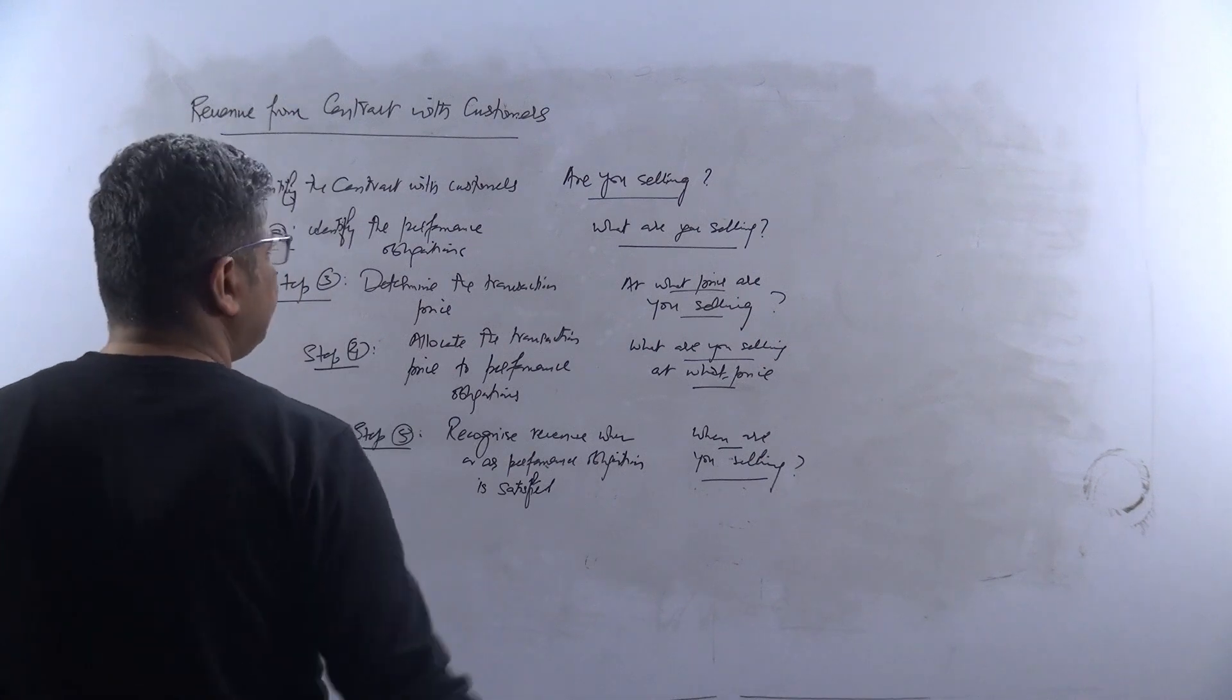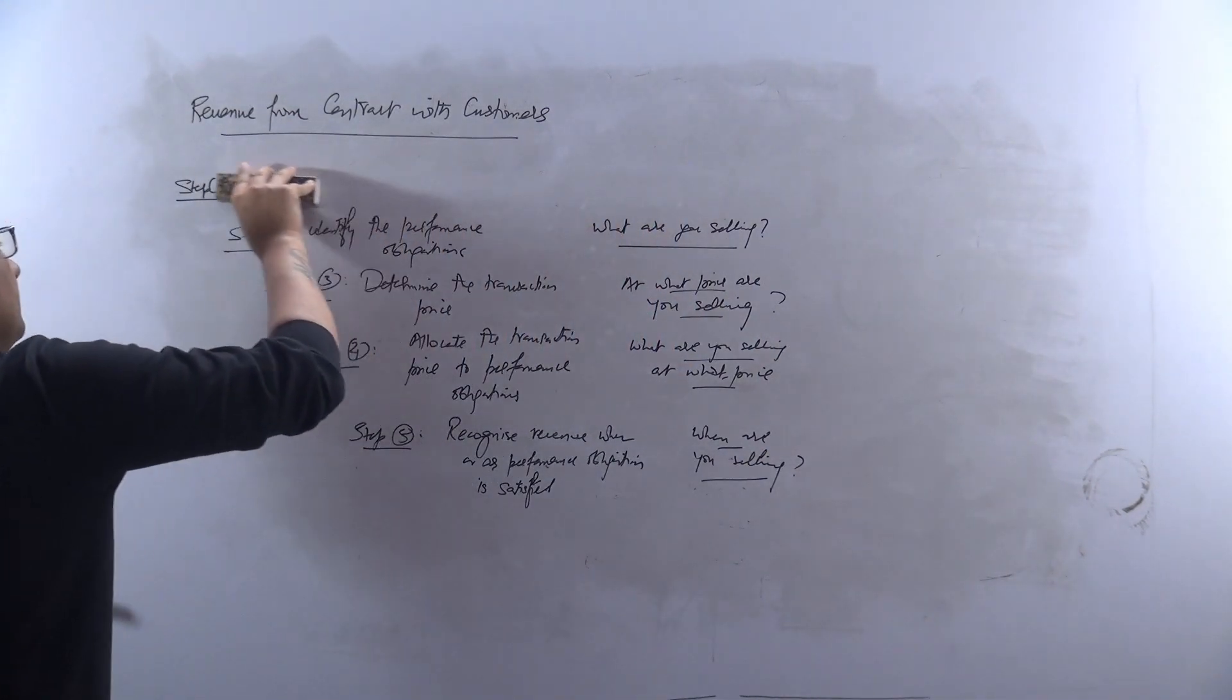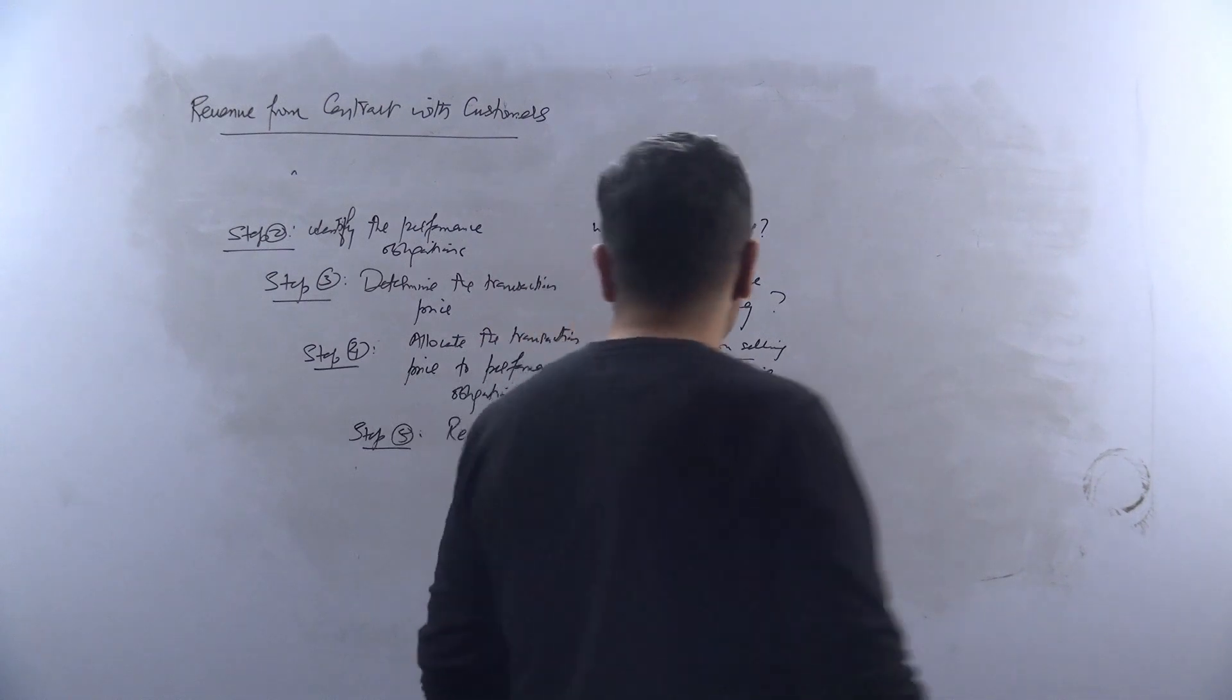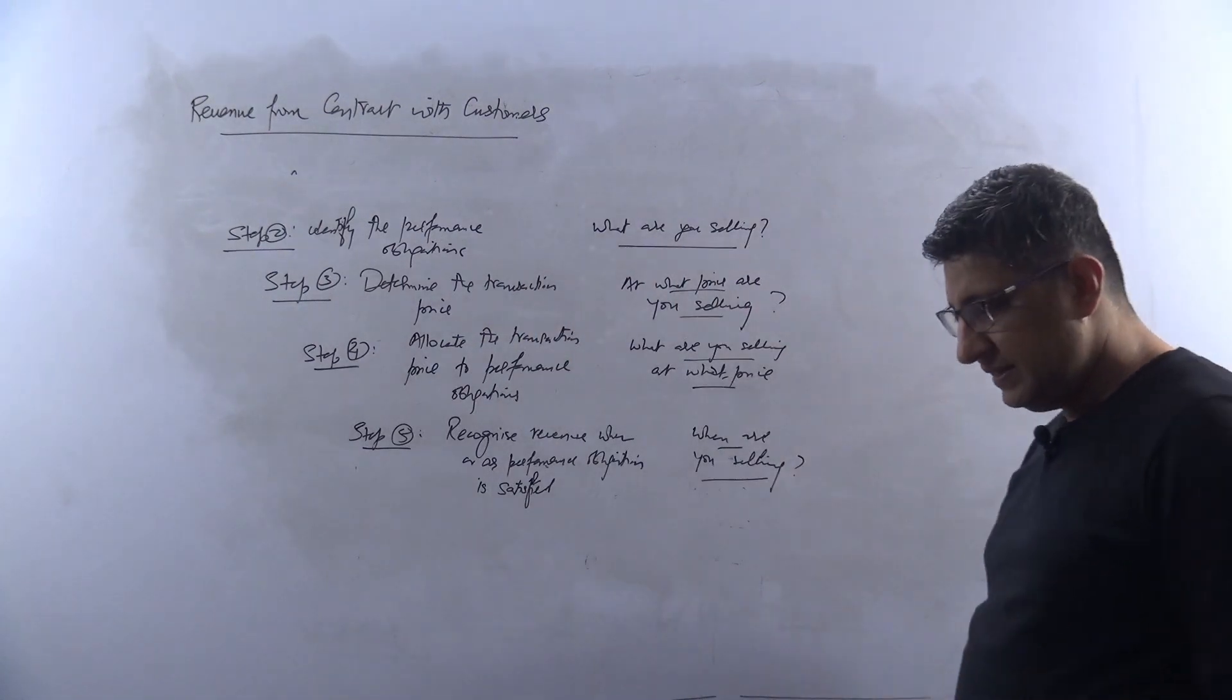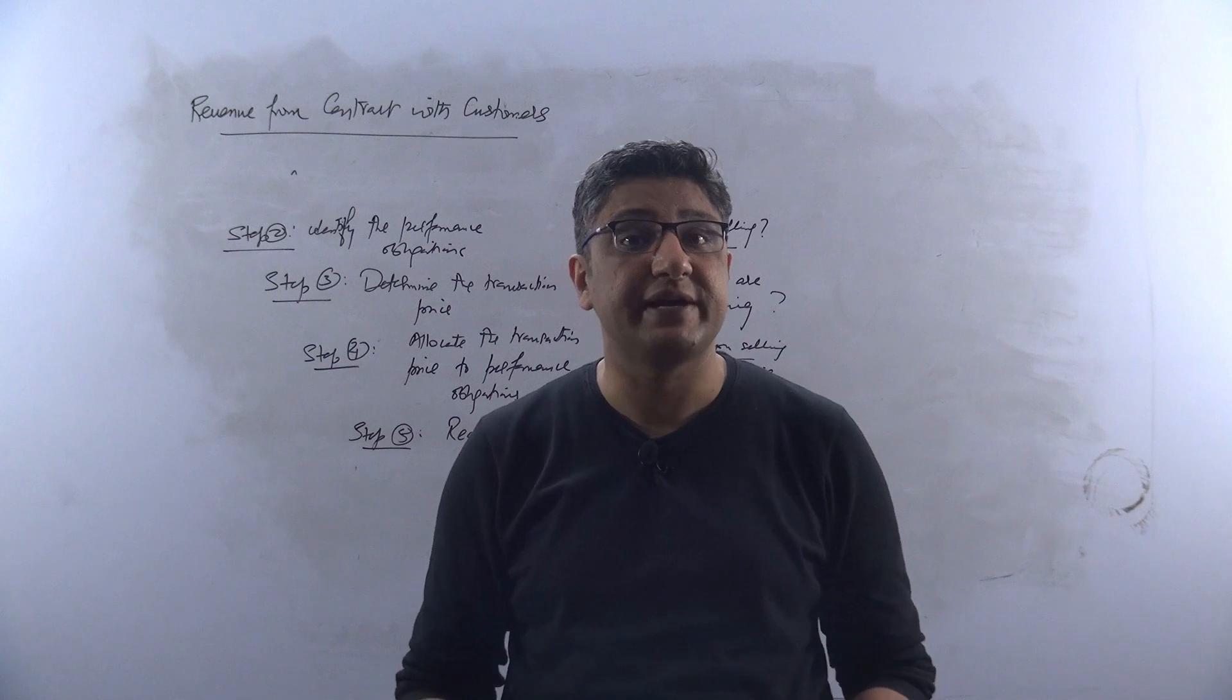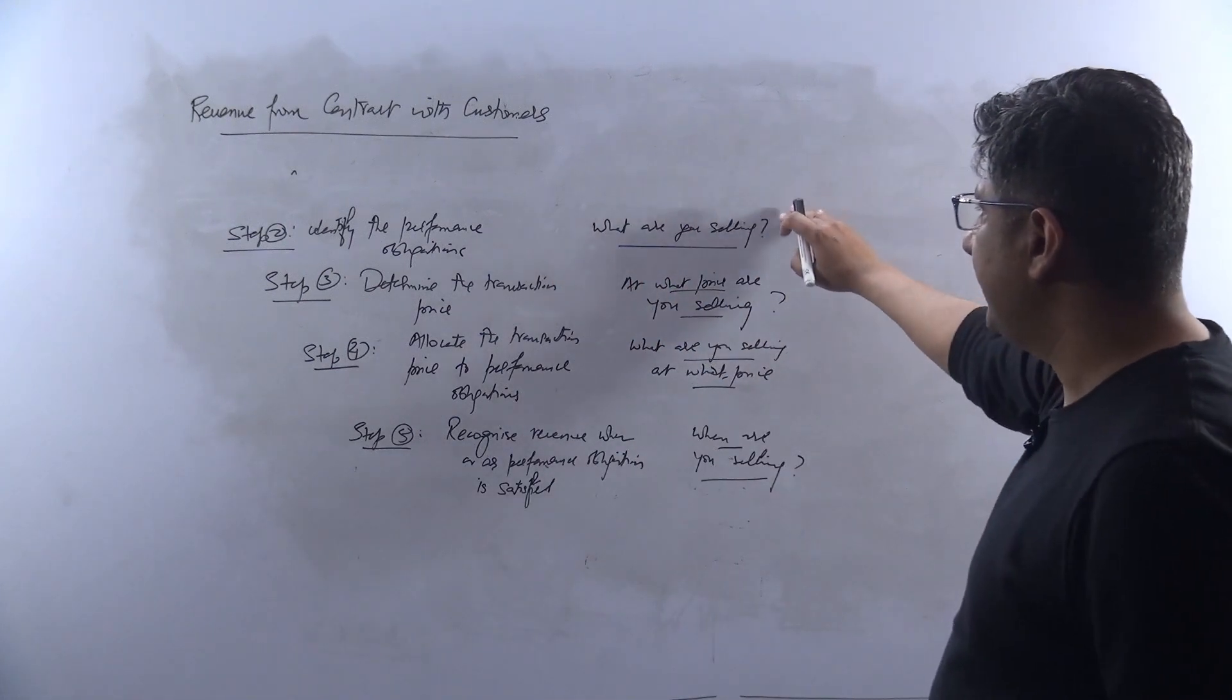The second part that comes: identify the performance obligation. That is, what is it that you are selling? Now of course, we don't want to discuss it in very detail around each of these steps. Otherwise, the first step itself is fairly comprehensive. The second part that comes is: identify the performance obligation. That is, what are you selling?